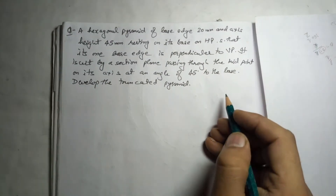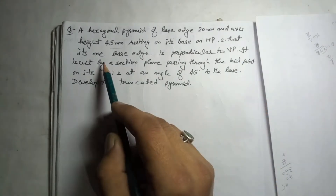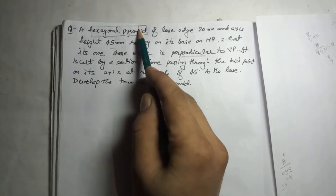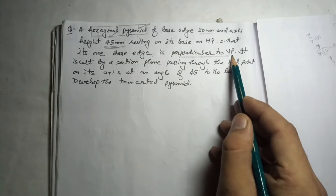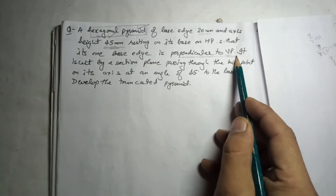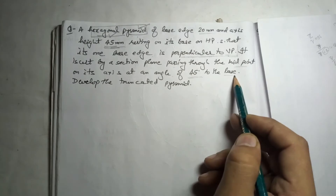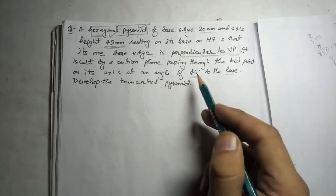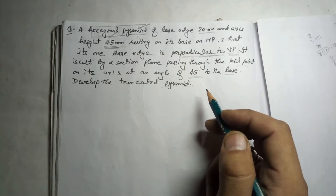We will solve one more question on the radial line method. The question says that a hexagonal pyramid of base size 20 mm and axis height 45 mm is resting on its base on HP such that one base edge is perpendicular to VP. This is a hexagonal pyramid, so the method is radial line. It is cut by a section plane — we will solve the full shape first, then handle the sectioning.